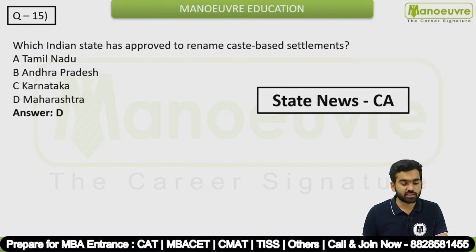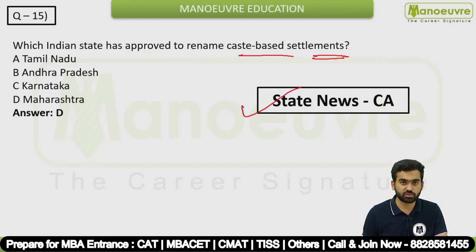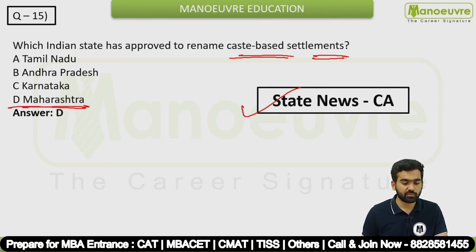Question 15: Which Indian state has approved renaming caste-based settlements? This was a state-based news question. The answer is Maharashtra.